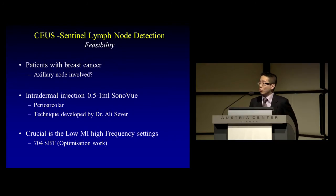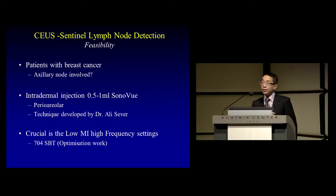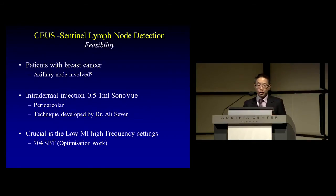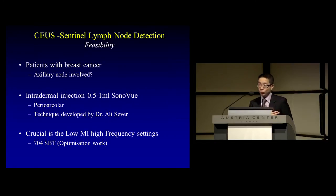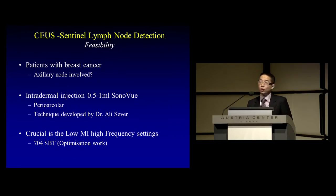Just before we close, I'd like to update you on our trials and tribulations of detecting the sentinel lymph node in patients with breast cancer for staging purposes. We were based on a technique developed by Dr. Ali Seaver, where you inject a small volume — 0.5 to 1 ml of SonoVue — intradermally in the peri-areolar region, and aim to detect the first node it drains to. Dr. Seaver does this very well, but it isn't as easy in practice. The key is to optimize your scanner settings for low mechanical index using an S704-SBT probe.